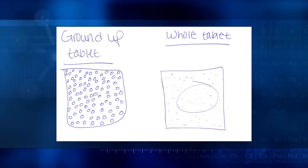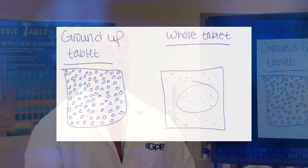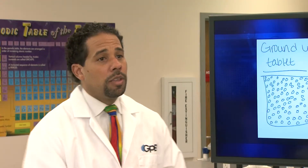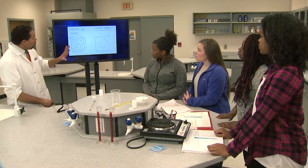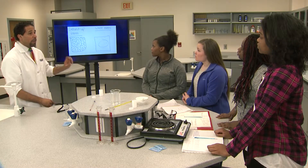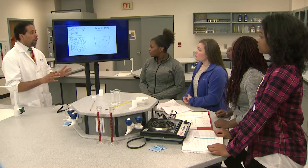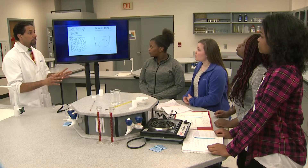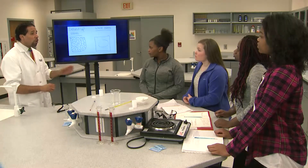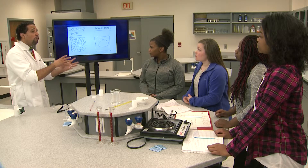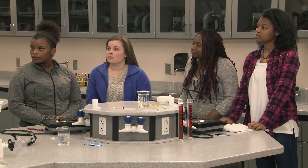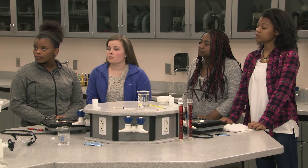We tried to show that in our model — we think smaller particles will react more quickly because they have more surface area touching the water. Your reasoning is correct. Smaller particles do react faster because they expose more surface area to undergo collisions, and smaller particles also move more freely and are therefore more likely to collide with other molecules.